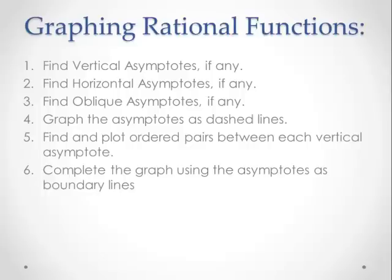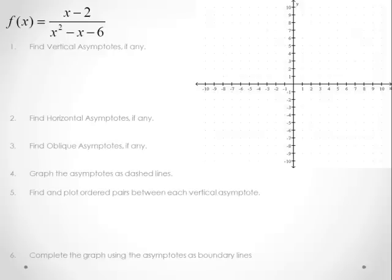For graphing rational functions, these are some things that we want to keep in mind. The first thing we want to do is find vertical asymptotes, if any. For vertical asymptotes, we always look at the denominator.